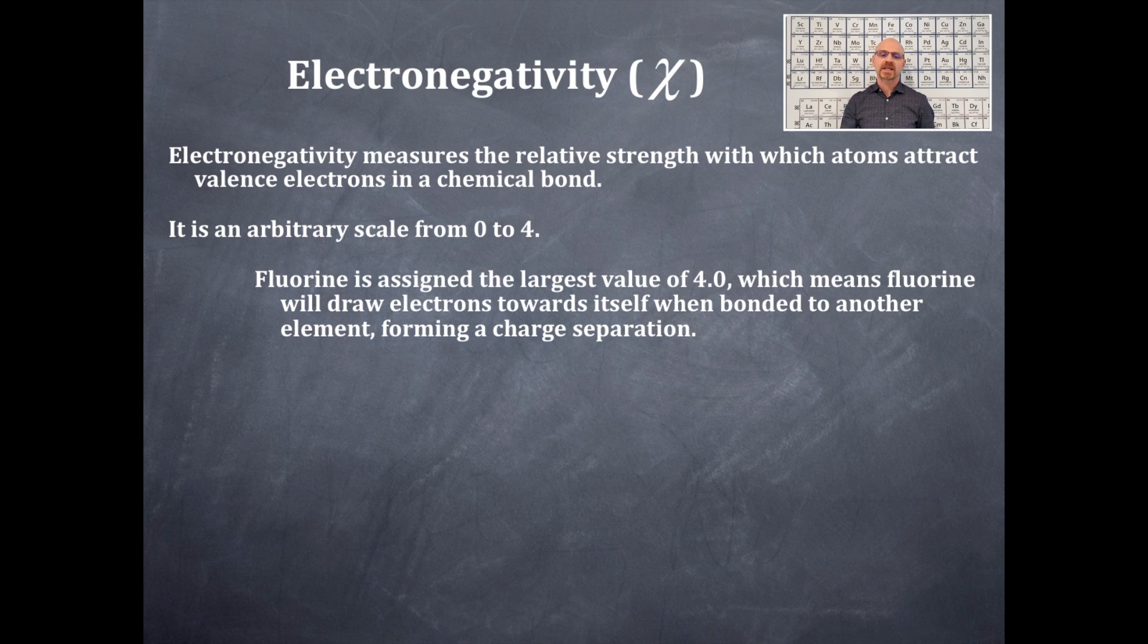Fluorine is assigned the largest value of 4.0, just like a perfect GPA on a 4-point scale, which means fluorine will draw electrons towards itself when bonded to another element, forming a charge separation or a dipole.